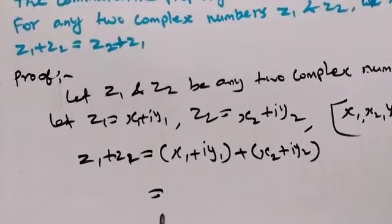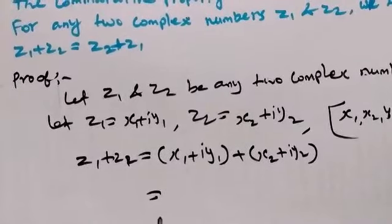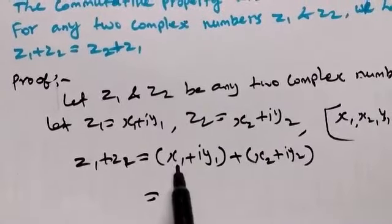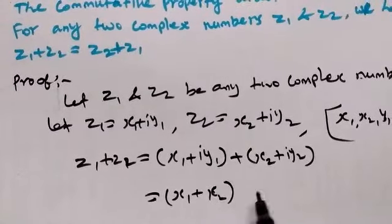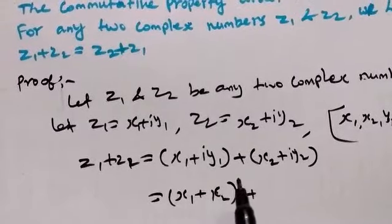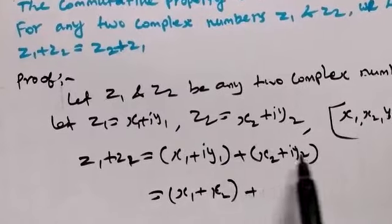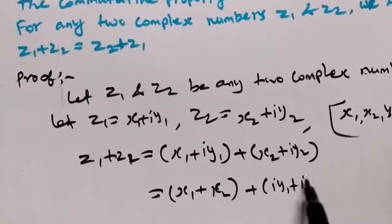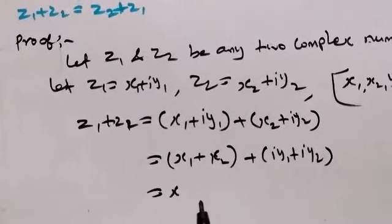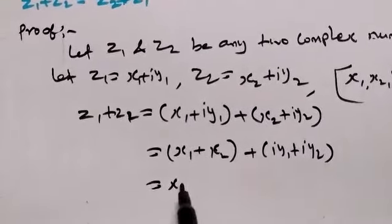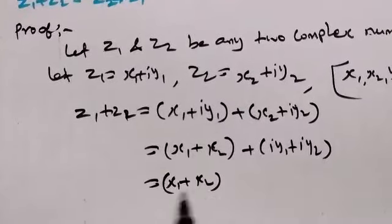Grouping the terms together: = (x1 + x2) + i(y1 + y2).